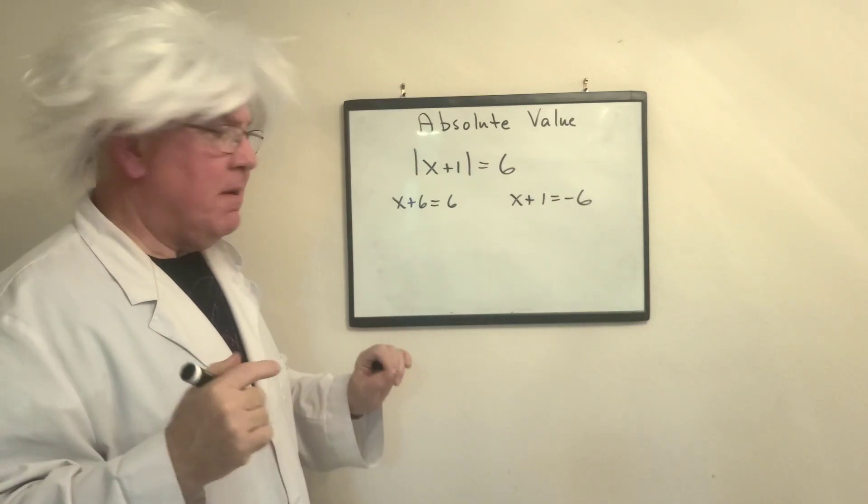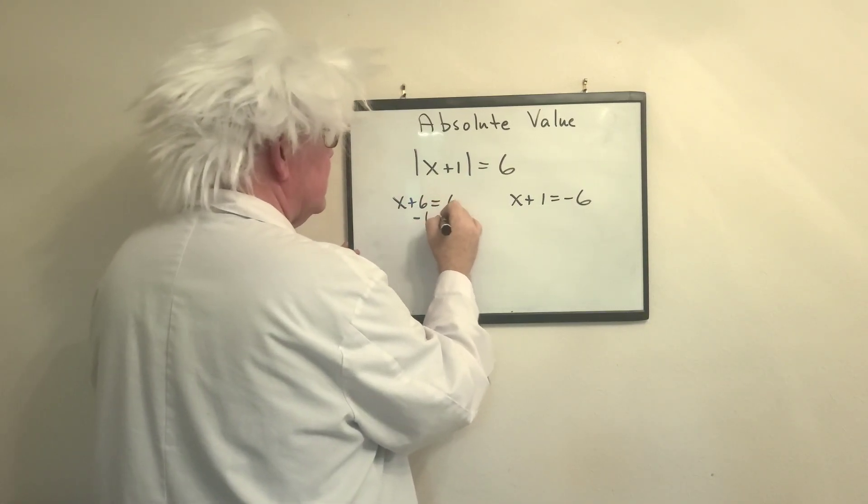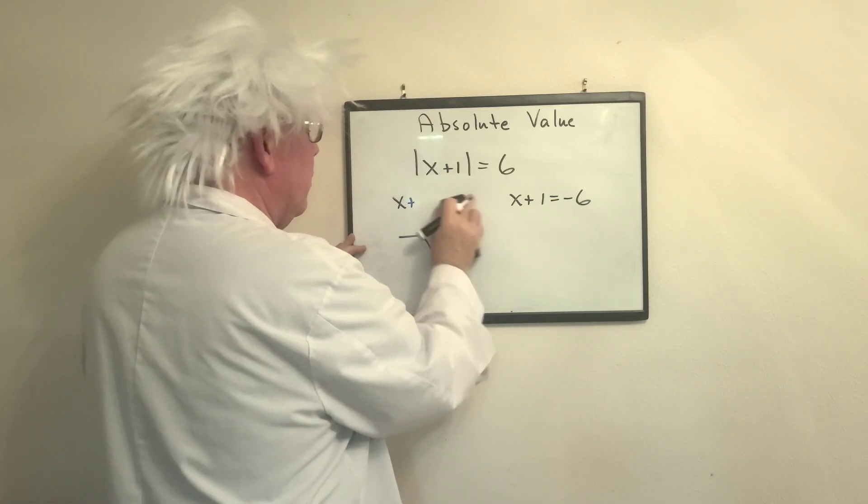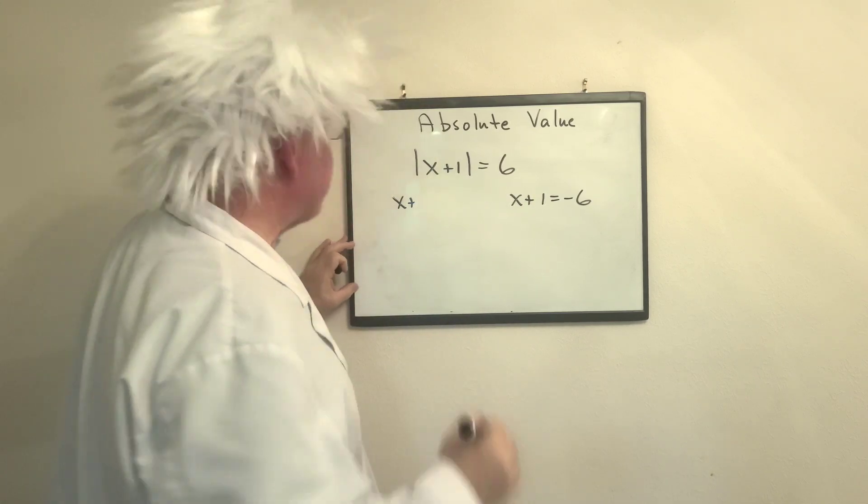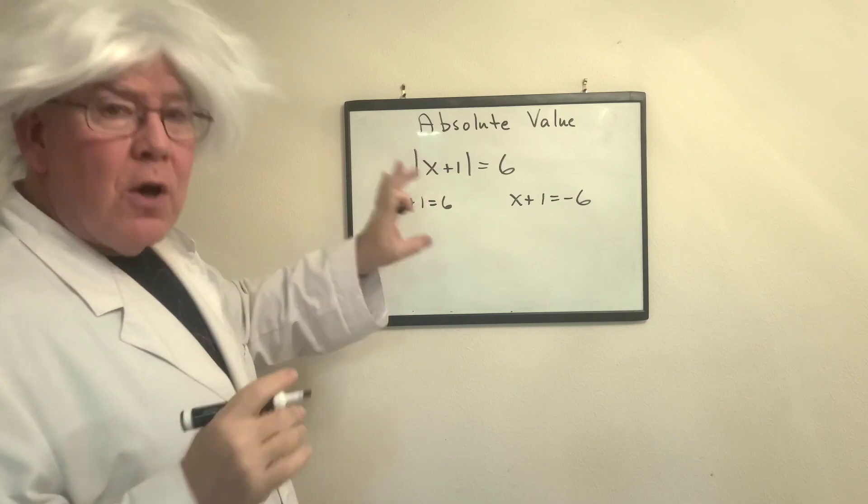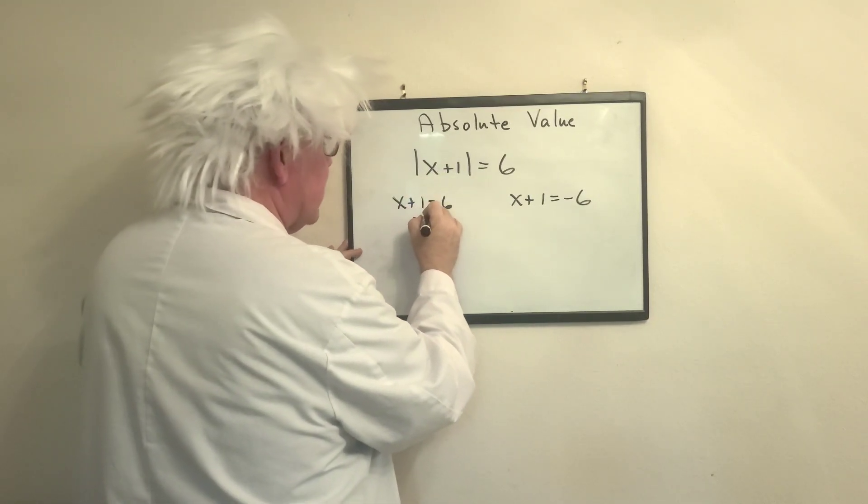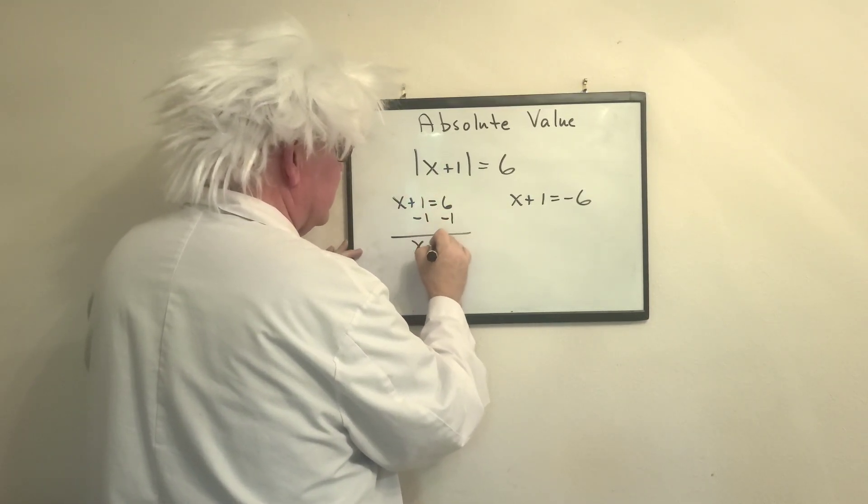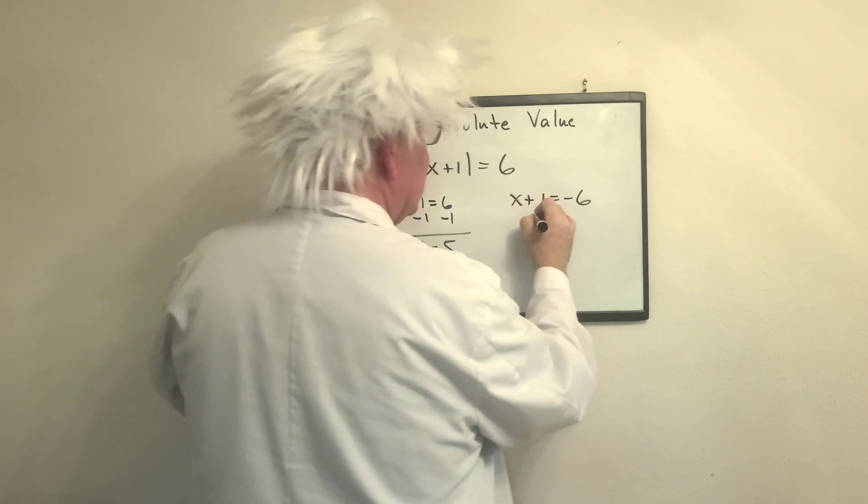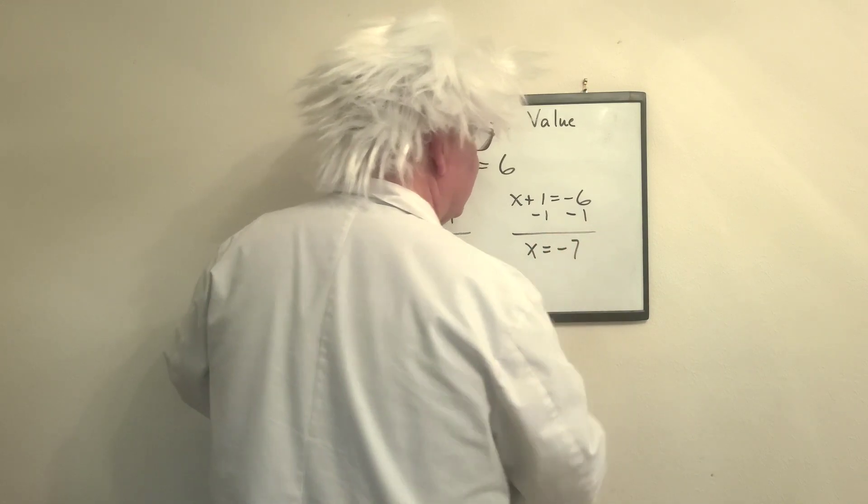Now, you're going to solve them. So you're going to say, subtract 1 from both sides. Professor Algebra went crazy. We do that every once in a while. Now, so next thing I'm going to do, I'm going to subtract 1 from both sides. So x equals 5. Way to go, Professor Algebra. Now, I'm going to subtract 1 from each side and x equals negative 7.